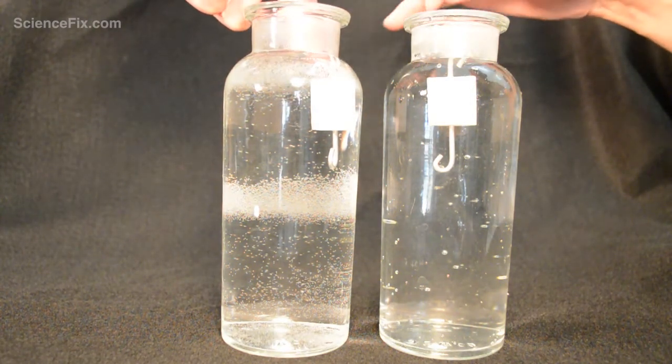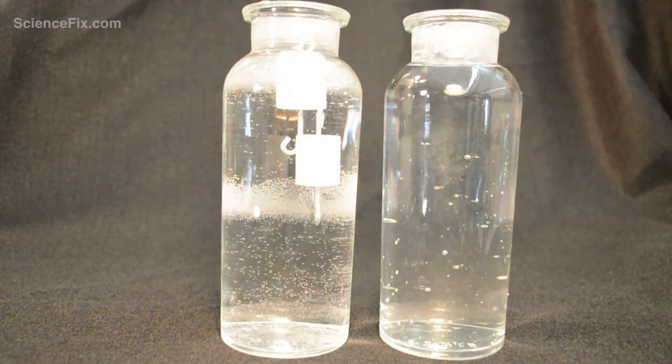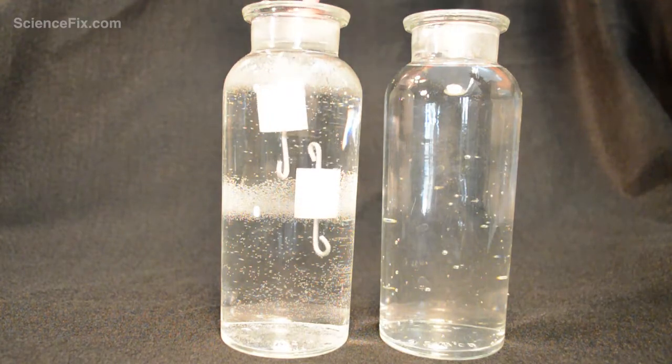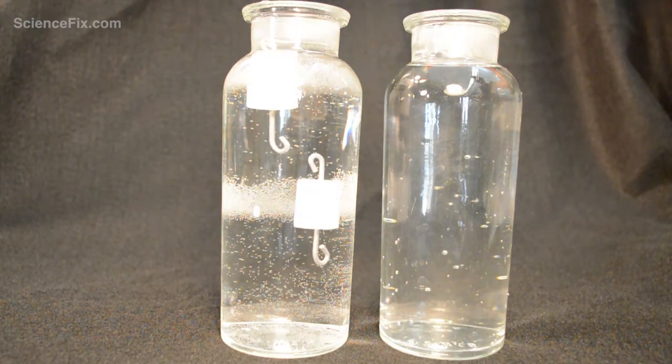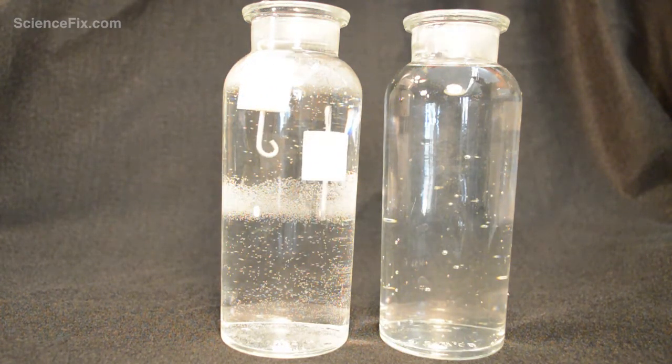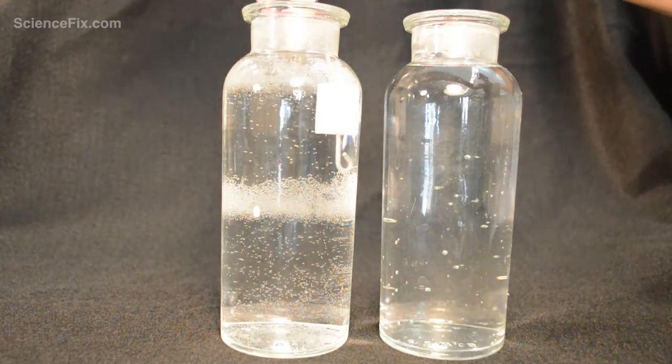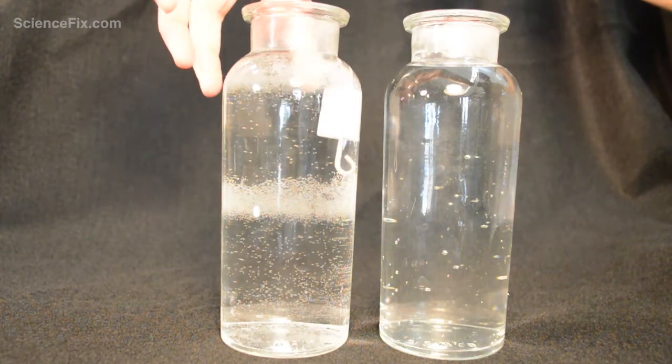So our question was, well what causes this to happen? Well, if you take a look at the bottled water to the left, you might notice it's covered on the inside with tiny bubbles of air. They're everywhere. Whereas the bottle of water on the right doesn't have those same tiny bubbles of air everywhere.